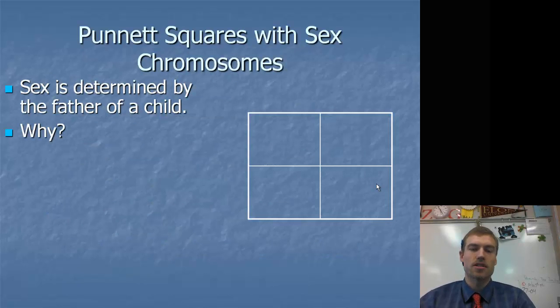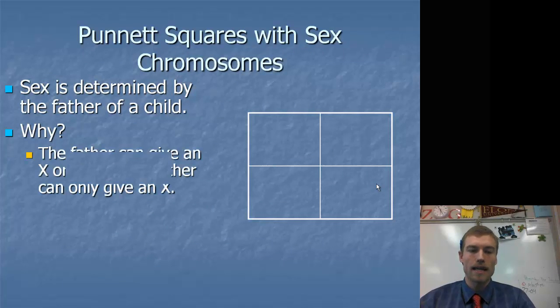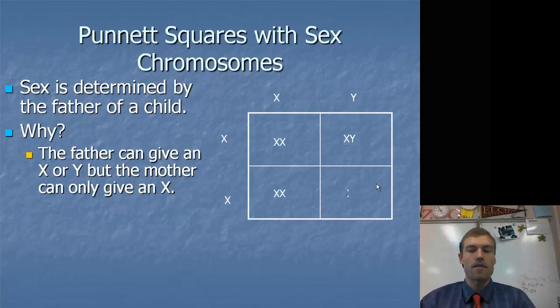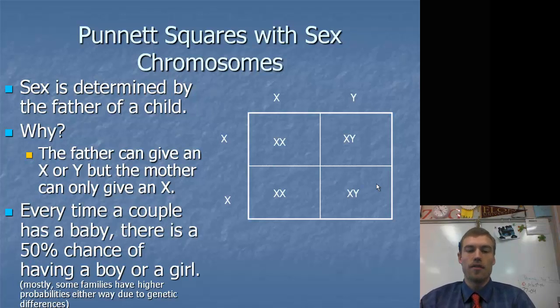The sex is determined by the father of a child. Why? The father can give either an X or a Y, but the mother can only give an X. So if we set up a Punnett square, the gametes from the father will either have an X or a Y, and the gametes from the mother will either have an X or an X. We have a 50 percent chance of either getting a boy or a girl. Some families have higher probabilities one way or the other based on genetic traits.